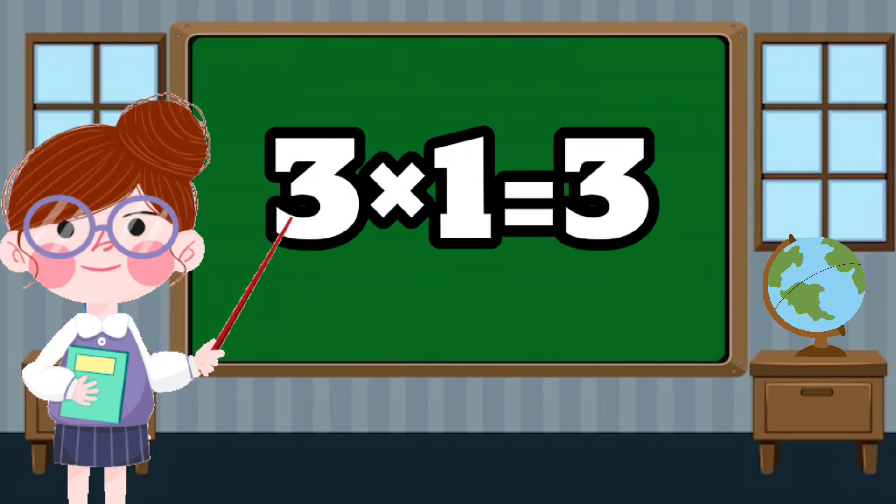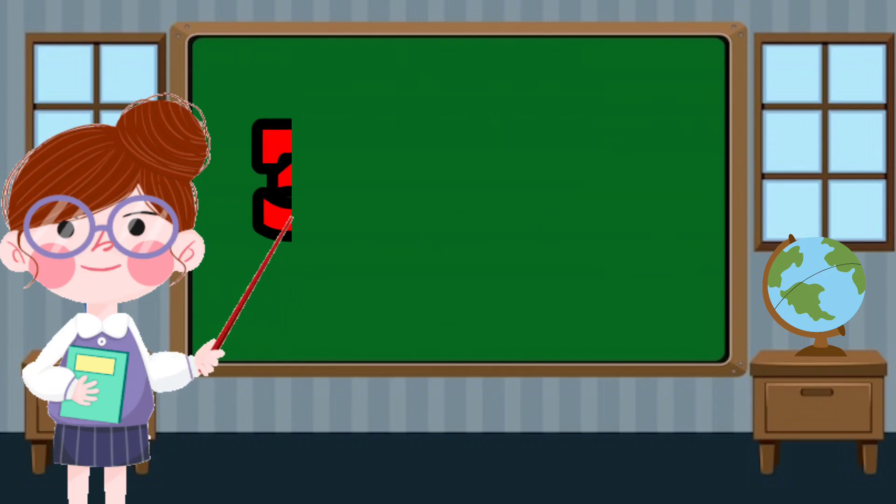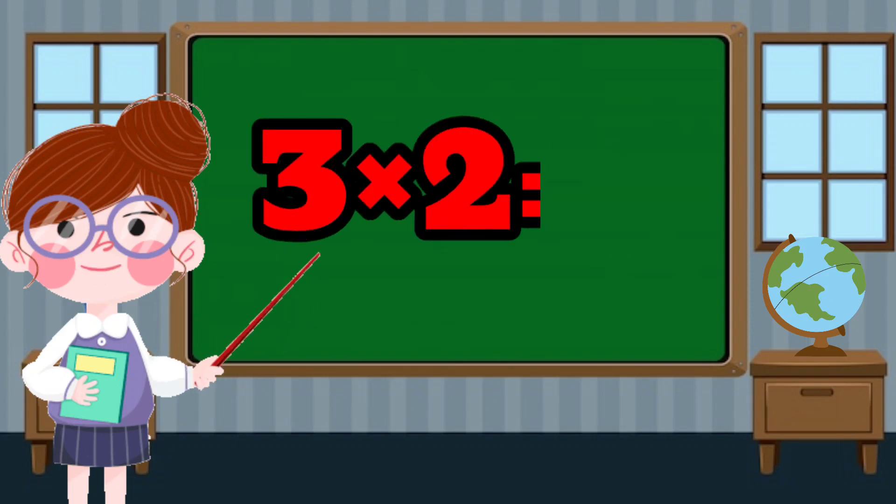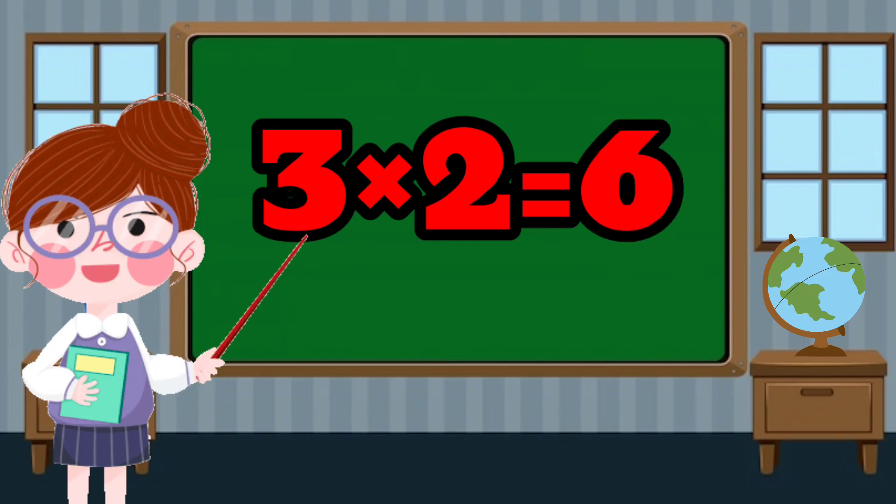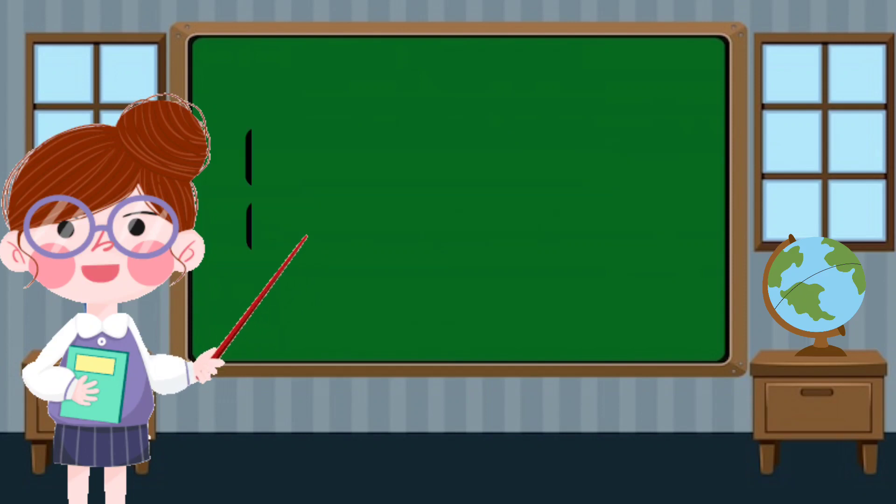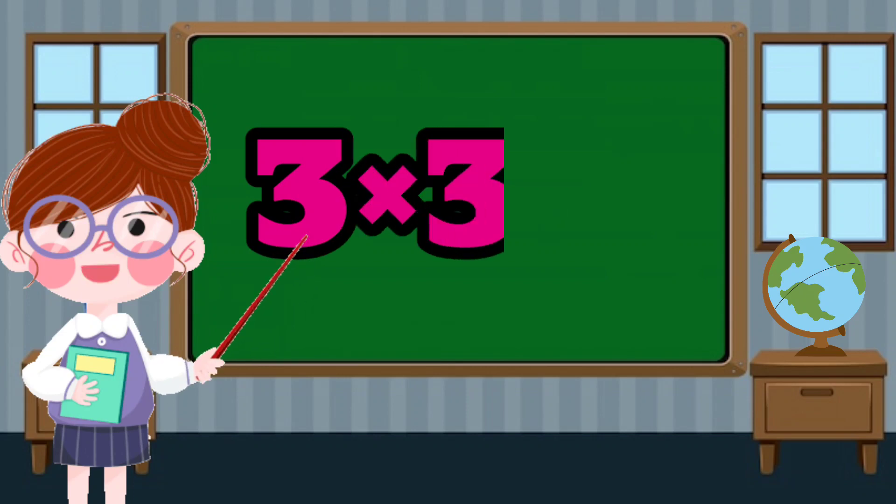3 times 1 equals 3. 3 times 2 equals 6. 3 times 3 equals 9.